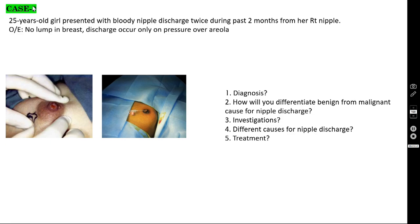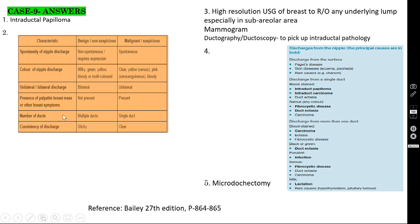Case number 9: a 25-year-old lactating girl presented with bloody nipple discharge twice in the past two months from her right nipple. On examination, no lump in the breast. Discharge occurs only on pressure over the areola — you see the bloody nipple discharge only when pressing the areola. The diagnosis is intraductal papilloma.